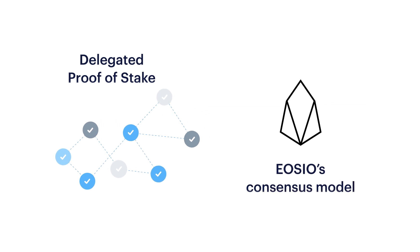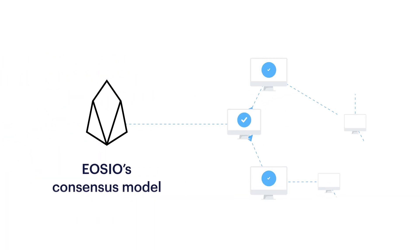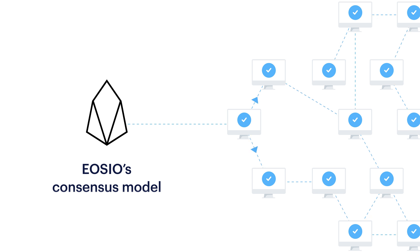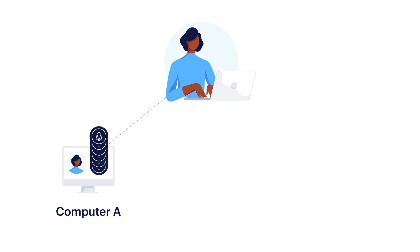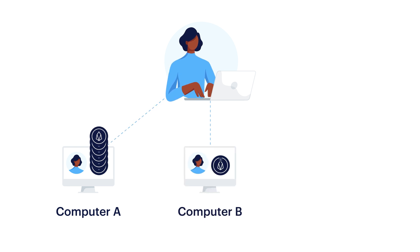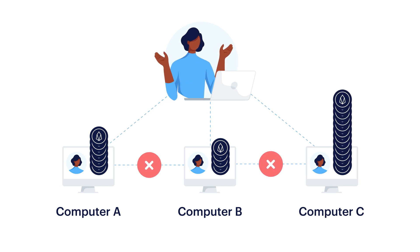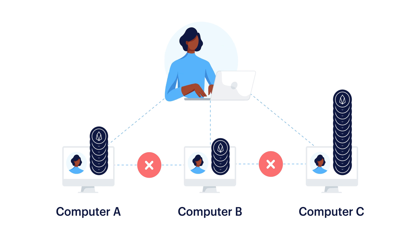What's a consensus model, and how does it work? In the world of blockchain, consensus is how all the computers that run the network reach agreement. If computer A thinks that Sally has six tokens, computer B thinks that Sally has four tokens, and computer C thinks that Sally has 12 tokens, then they don't have consensus.